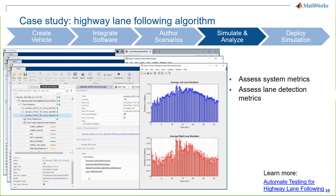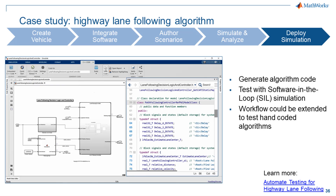We can also look at the performance of an individual component, such as the lane detection algorithm — comparing algorithm performance to the ground truth. This kind of report shows whether or not we've met the requirements for our system. With the reference design, we have generated code for the algorithms to be used for software-in-the-loop testing or deployment to hardware. Keep in mind, the workflow we just showed will also work for integration and test of hand code. If you'd like to explore deploying this model to a distributed simulation or the cloud, our application engineers and consulting organization can help you scale based on your specific needs and environment.